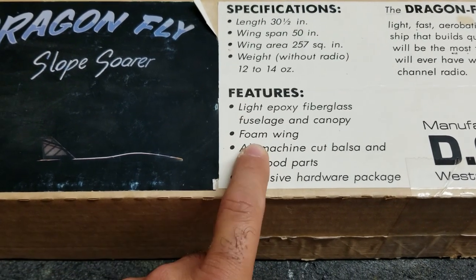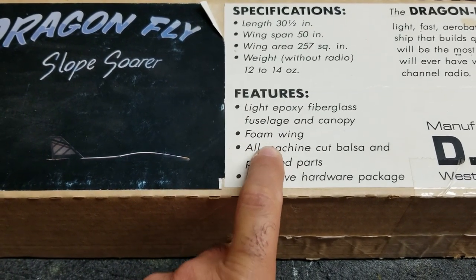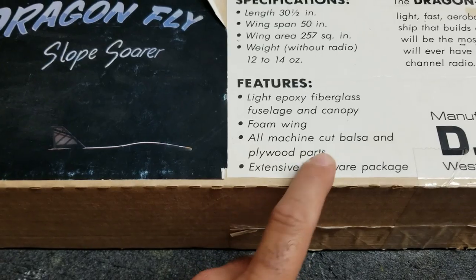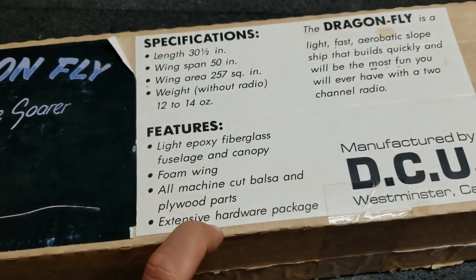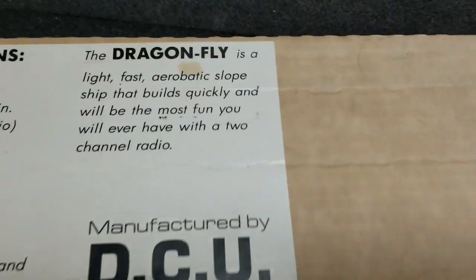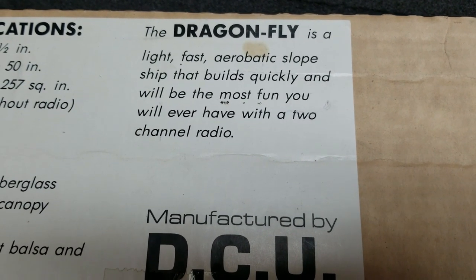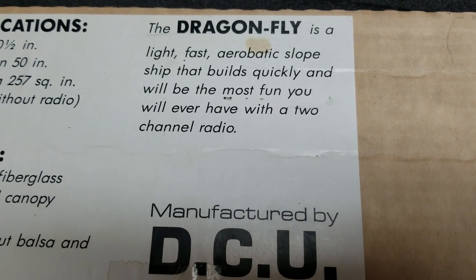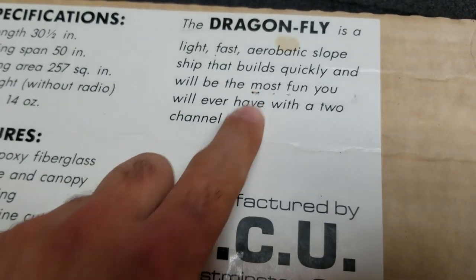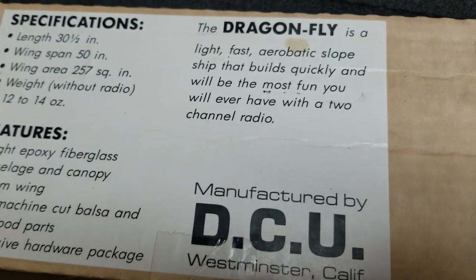It does have an epoxy fuse, foam core wing that needs to be sheeted with balsa, balsa tails, some ply parts, and some hardware. And there's a description: a light, fast aerobatic slope ship that builds quickly and will be the most fun you will ever have with a two channel radio. I don't know about that, that's a pretty big claim.